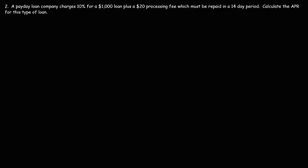Now, let's move on to number two. A payday loan company charges 10% for a $1,000 loan plus a $20 processing fee, which must be repaid in a 14-day period. Calculate the APR for this type of loan.